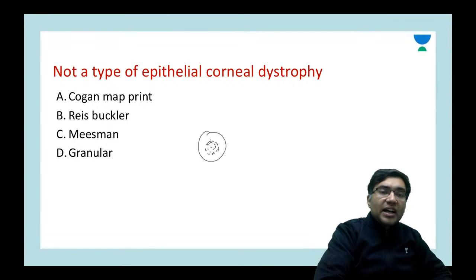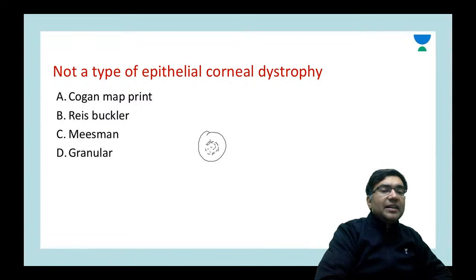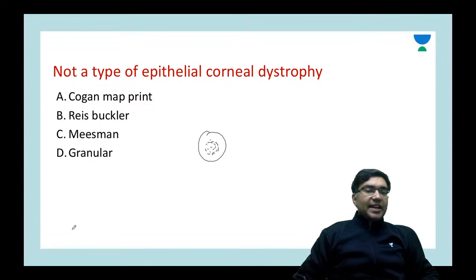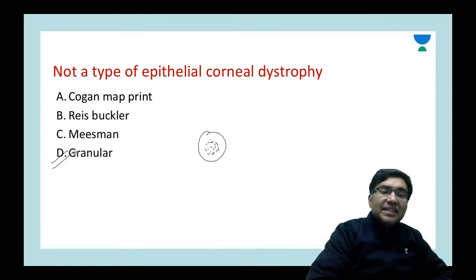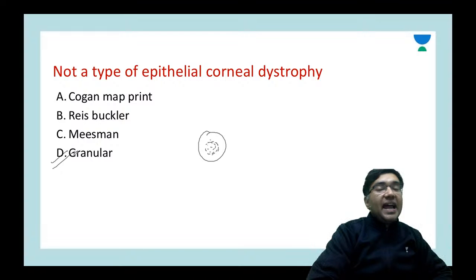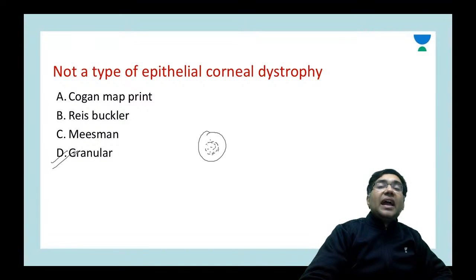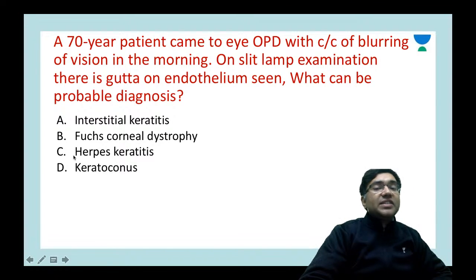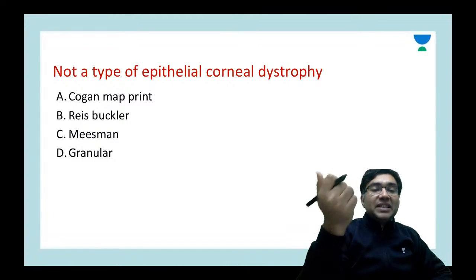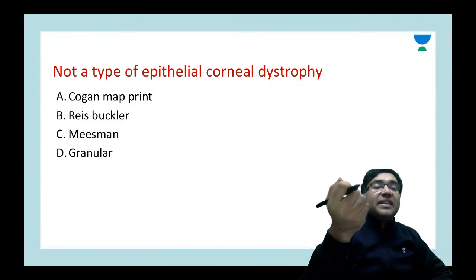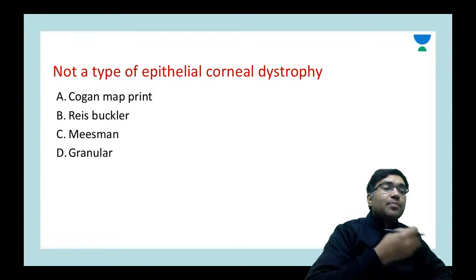Not a type of epithelial corneal dystrophy: Cogan's microcystic, Reis-Bücklers, Meesmann, or granular. The answer is D — granular dystrophy is a stromal dystrophy. Granular, macular, and lattice dystrophies are the most common stromal dystrophies. Cogan's microcystic is the most common type of epithelial dystrophy. Reis-Bücklers and Meesmann also involve the epithelium as well as Bowman's membrane. In broad categories, Reis-Bücklers is called epithelial-Bowman's membrane corneal dystrophy, not a stromal dystrophy.